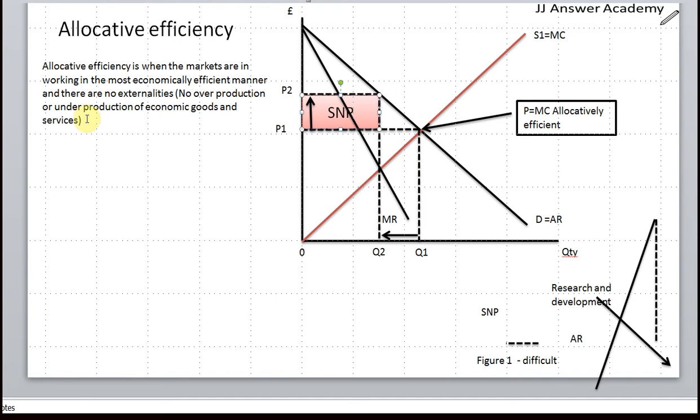Let me explain what we've just done. Markets are allocatively efficient where P equals MC. The price that customers are willing to pay is equal to the cost of the firms manufacturing that good, which is MC, the cost of manufacturing one additional unit.